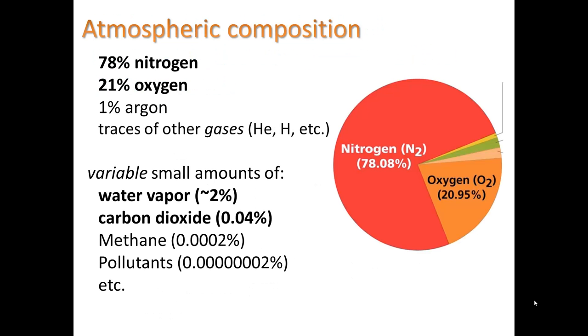We can see in this graph that water vapor is about 2%. Carbon dioxide very, very small, even though we know it has the biggest effect as a greenhouse gas. Methane is also a greenhouse gas, but it is in much smaller concentrations. And then you can see pollutants are in trace quantities.